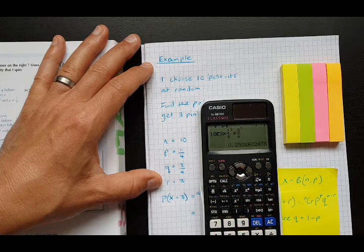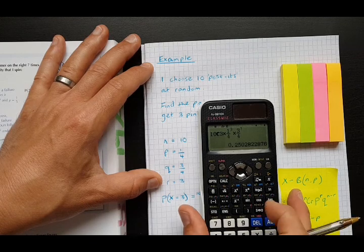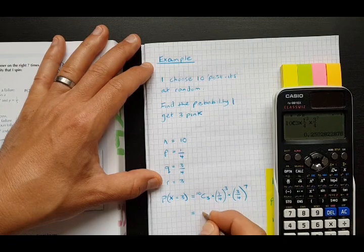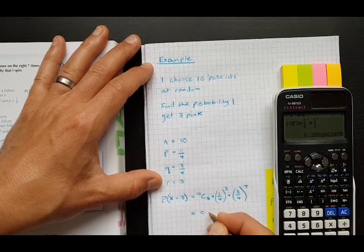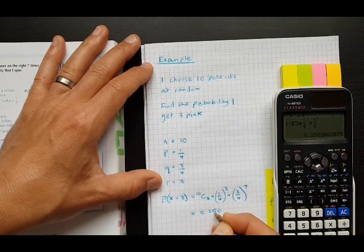So what do we get? We get our answer here on our calculator, and we would normally write this to three significant figures unless we're asked otherwise. So 0.255.